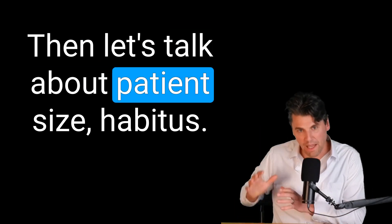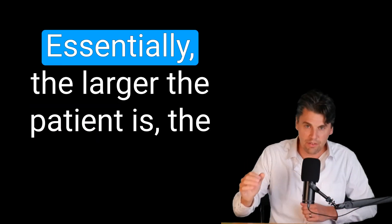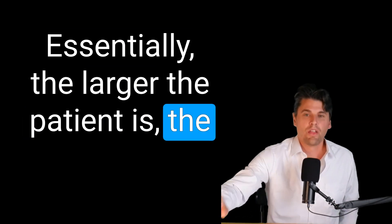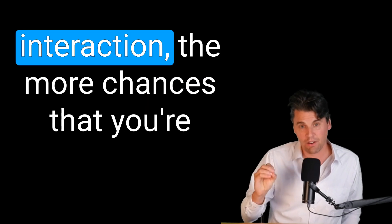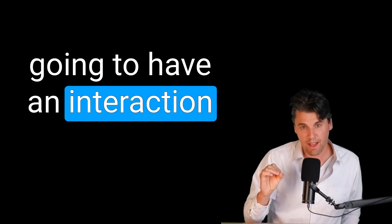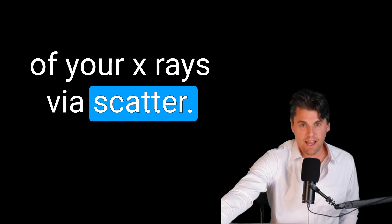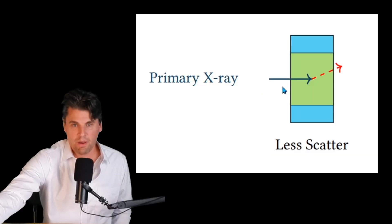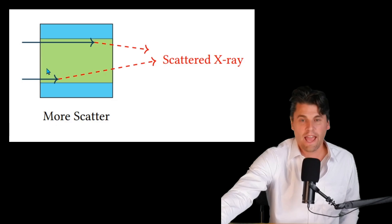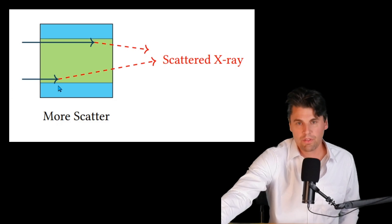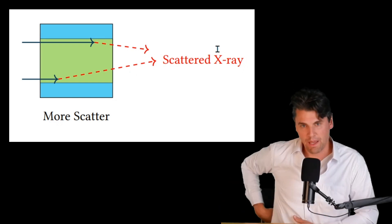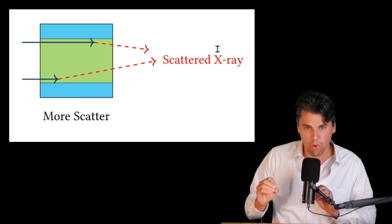Next, let's talk about patient size, or body habitus. Essentially, the larger the patient is, the more chances you're going to have for x-rays to interact via scatter. If you have a thicker patient area, there are more chances for those x-rays to interact via scatter, and you're going to get more scatter measured on your detector if you're crossing through more tissue.